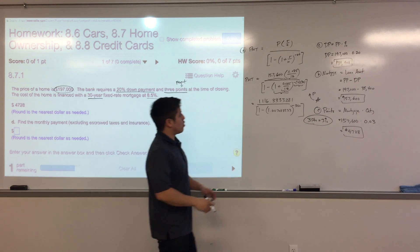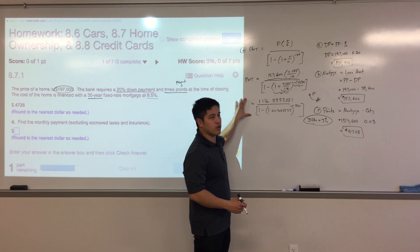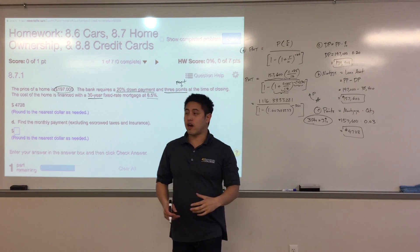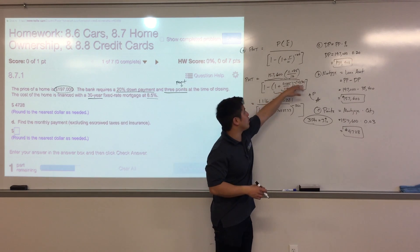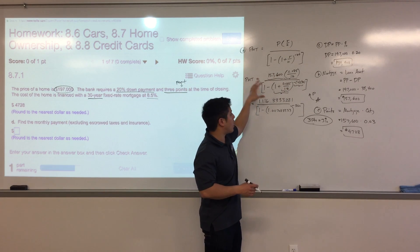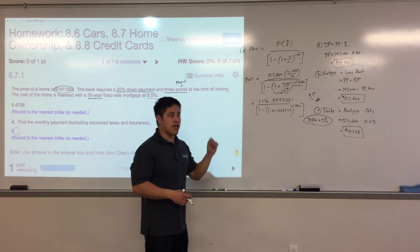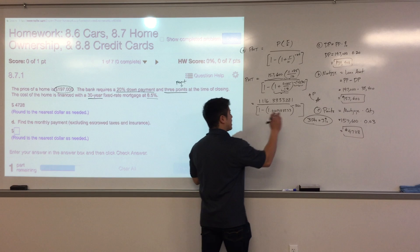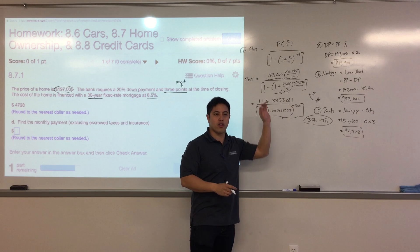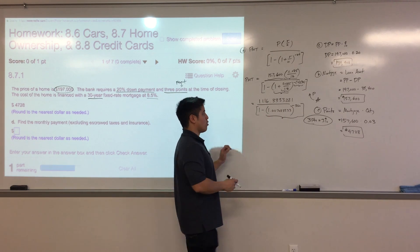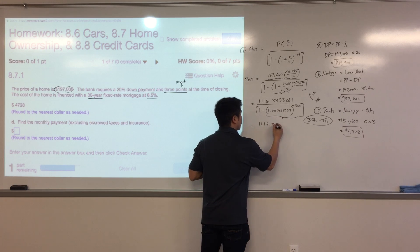If you're writing out all your steps, you can do this in stages. The next thing is to calculate 1.00708333 to the negative 360 power. That's really important to handle correctly.